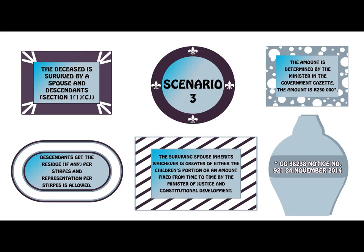In scenario three, we have a situation where the deceased is survived by both a spouse and descendants. Where the deceased is survived by a spouse as well as descendants, the surviving spouse inherits whichever is the greater of either the children's portion or an amount fixed by the Minister of Justice and Constitutional Development. The amount is determined by the Minister in the Government Gazette. As of 24 November 2014, the amount is R250,000. The descendants will get the residue, if any is left, per stirpes, and representation will also be used.